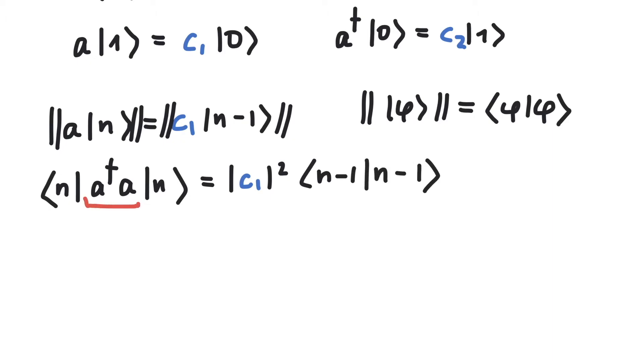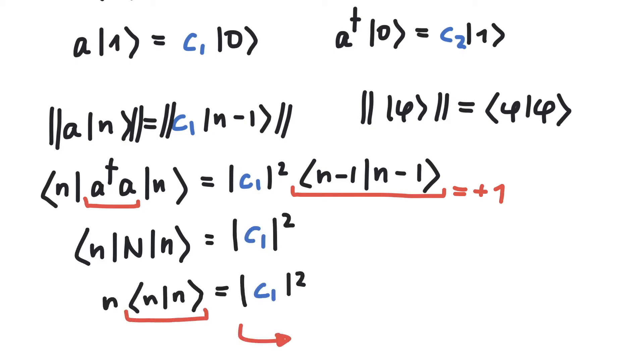On the left side, we have the number operator and on the right side, since we always take our states to be normalized, this is 1. The eigenvalue of the number operator on some state n is always n. Finally, we see that c1 is equal to the square root of n.